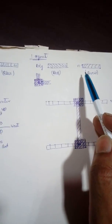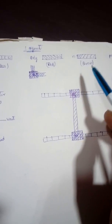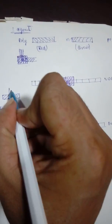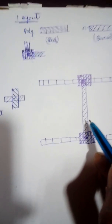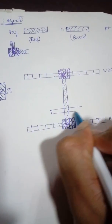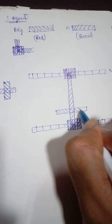A transistor is formed whenever the diffusion region crosses with the polysilicon region. Since this is an N-type transistor, you use N-plus diffusion. When the N-plus region crosses with the polysilicon region, a transistor is formed. This gives you the bottom transistor — that is your pull-down transistor.